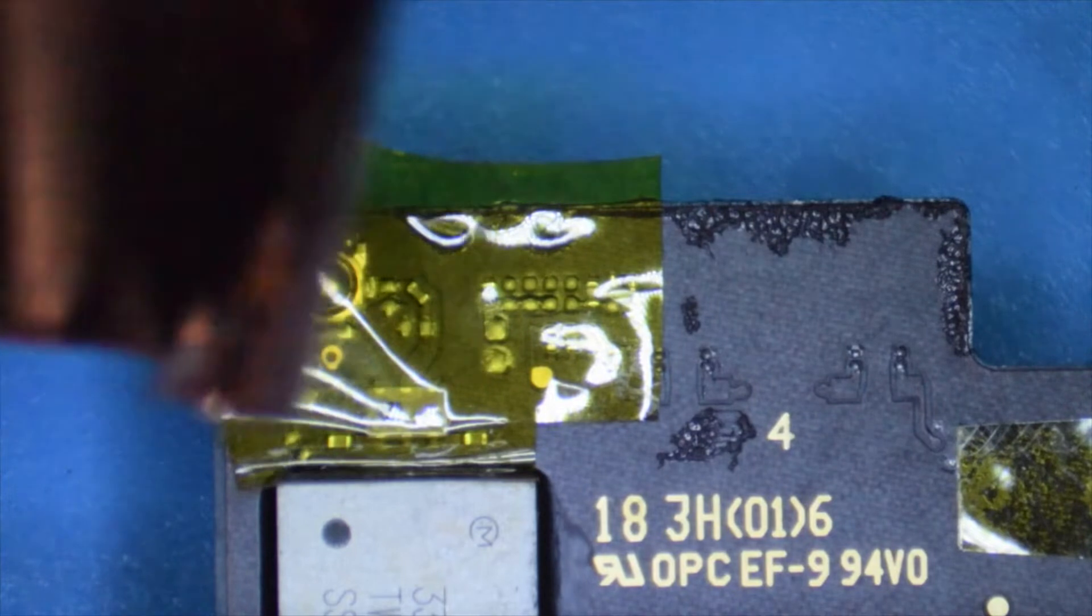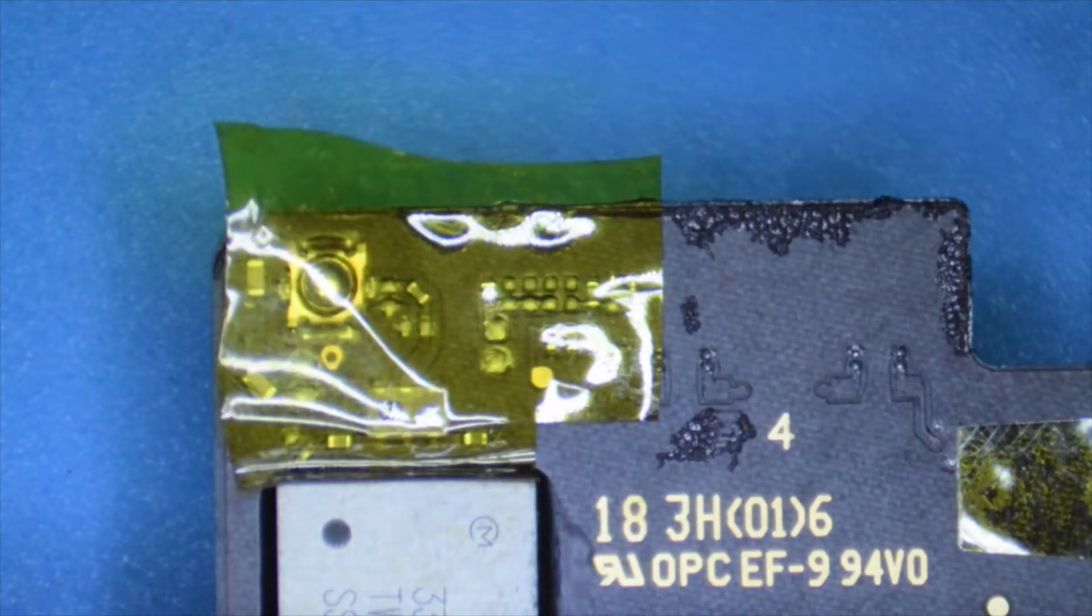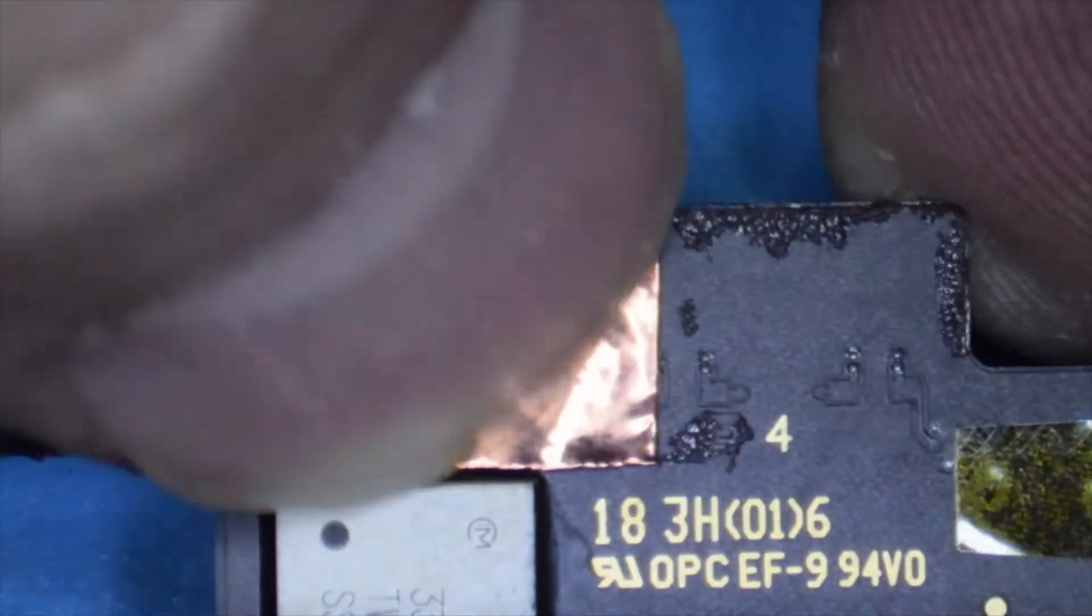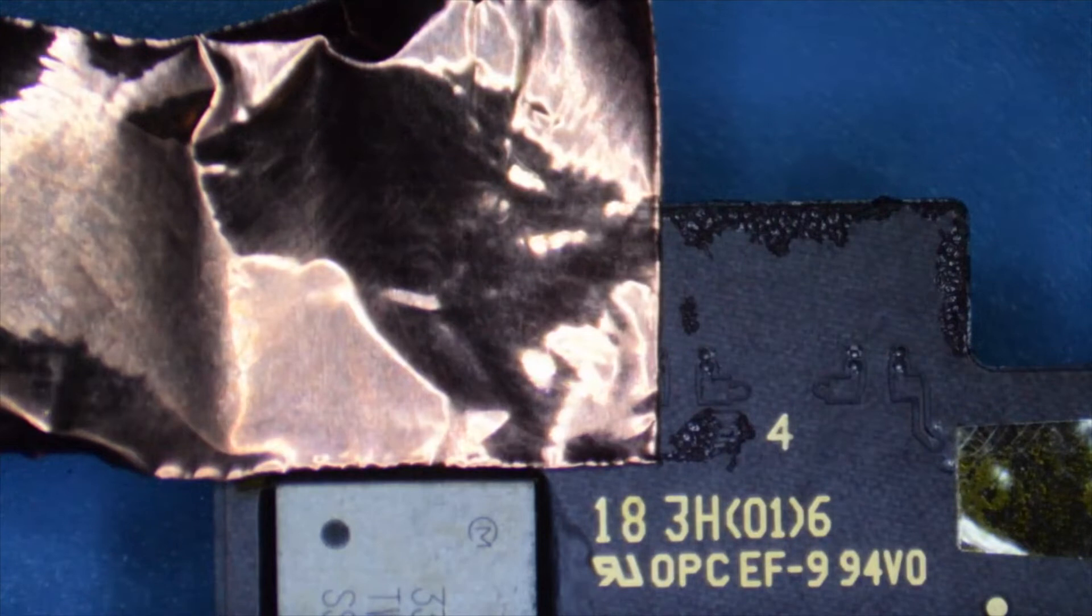I usually add a layer of Kapton tape and or another layer of that reflective foil on top. So you can probably get away with just the metallic tape. You don't necessarily need the Kapton, but whatever works best for you is fine as long as everything stays in place and it doesn't fall off while you're working on this area.